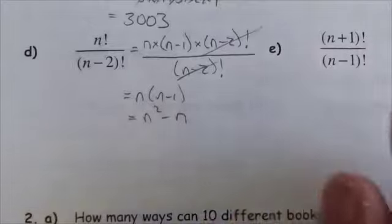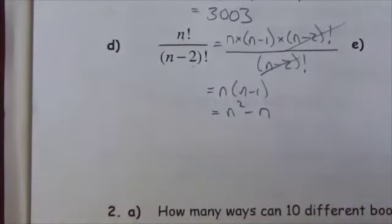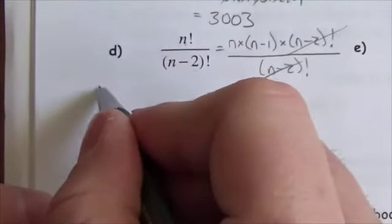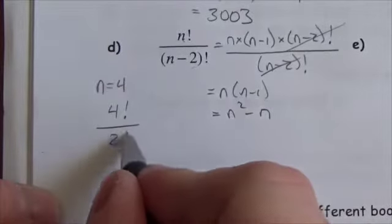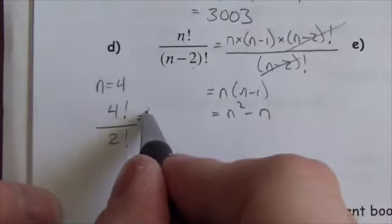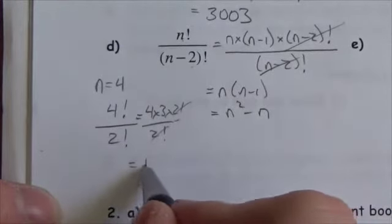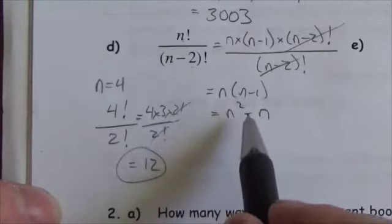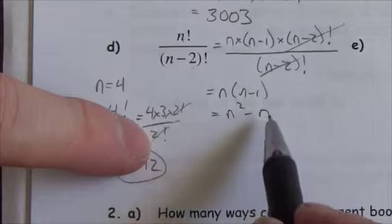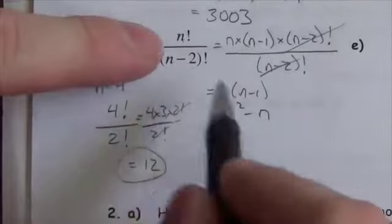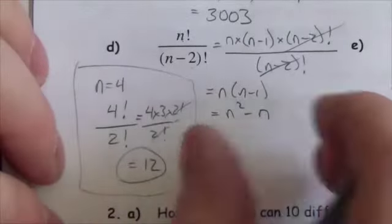If you're having trouble visualizing that, pick a number for n — say n equals 4. The numerator becomes 4 factorial, the denominator becomes 2 factorial. That gives 4 times 3 times 2 factorial over 2 factorial, which cancels to 12. Substituting 4 into n² minus n: 16 minus 4 equals 12. Verified — you can always plug in values to check your work.